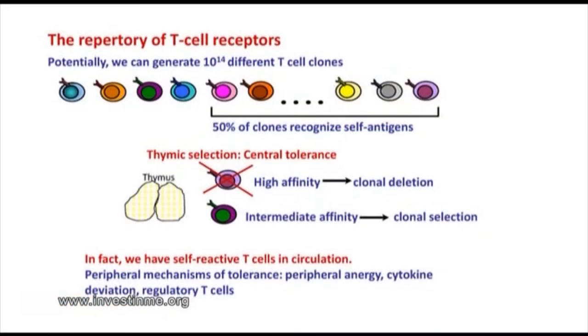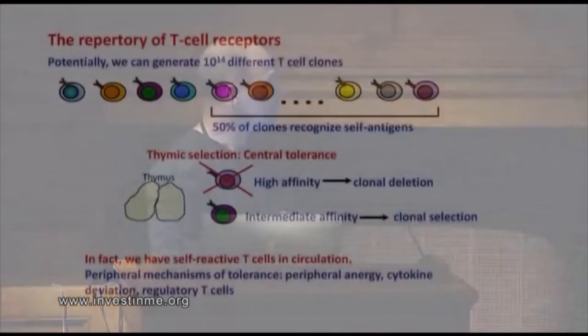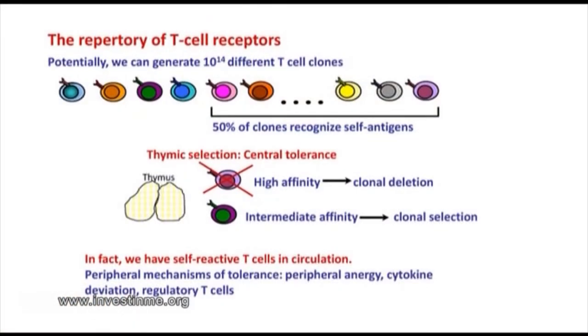This is very frequent because we can generate 10 to the 14th different T-cell clones that protect against everything in nature, and 50% of these clones can recognize self-antigens. Luckily, we have mechanisms of tolerance: mainly during thymic education, most T-cell clones that recognize self-antigens are eliminated. But to not compromise immunity too much, some T-cells that partially recognize both pathogen and self-antigen are kept — this is clonal selection.